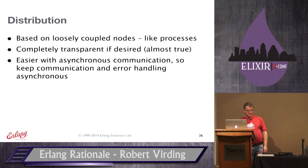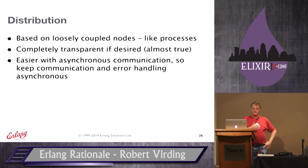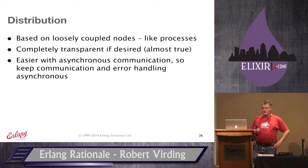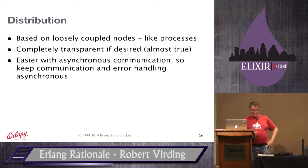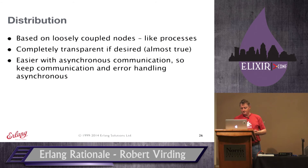Distribution: loosely coupled nodes, like processes. We were thinking very dynamically — nodes could come and go, it wasn't a predefined set. It's completely transparent if you want: you can use all the communication mechanisms and error handling with distributed nodes. Having everything asynchronous — communication and error handling — actually made it much easier to implement distribution. Except for one case: sending to a registered name on another node had four different error cases just to get that relatively simple feature working. Synchronous stuff is a pain.